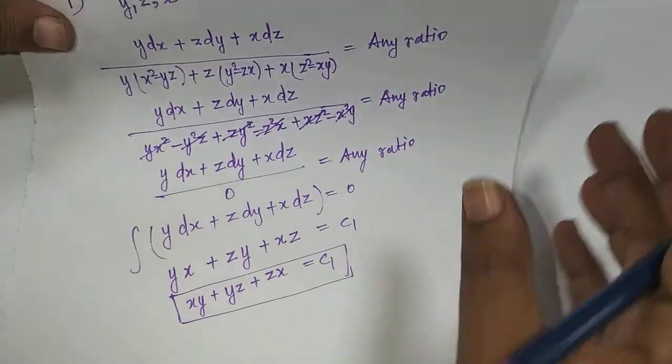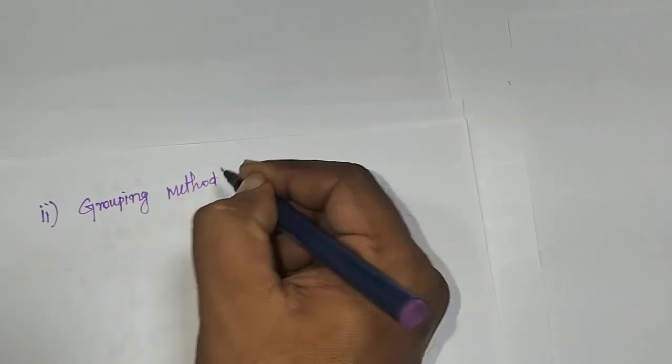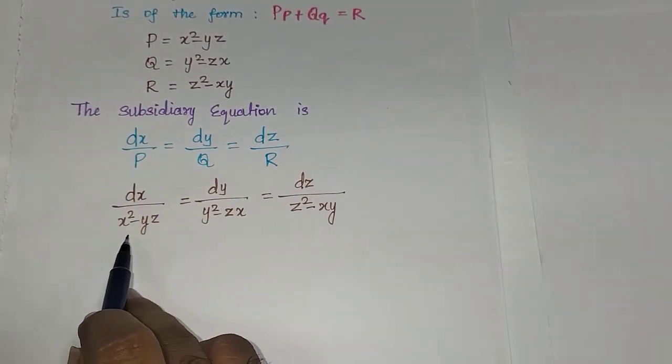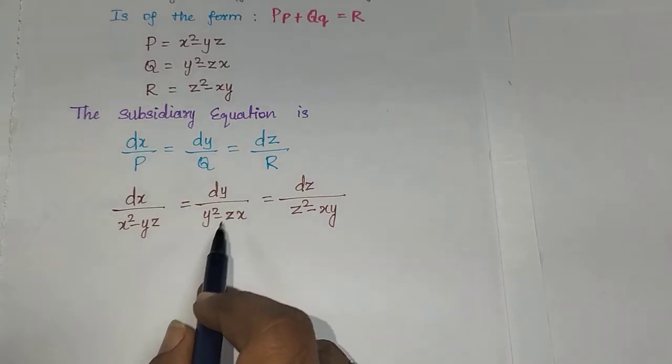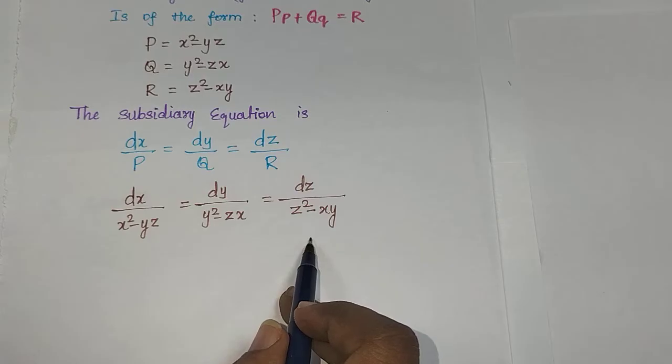For the second integral I am going to apply the grouping method in a different way. The subsidiary equation is: dx/(x² - yz) = dy/(y² - zx) = dz/(z² - xy).